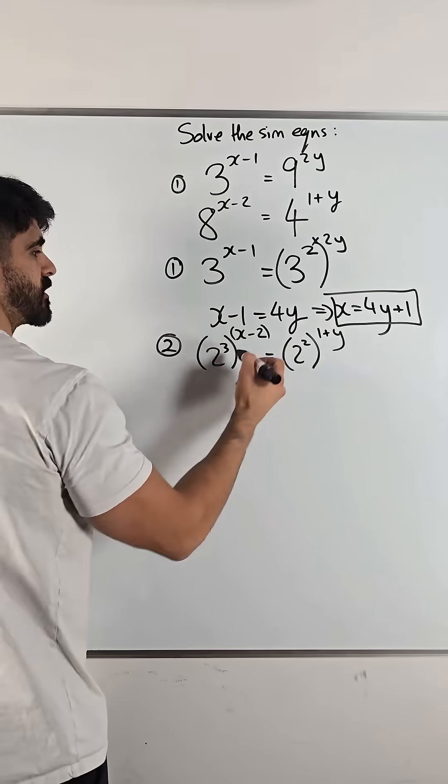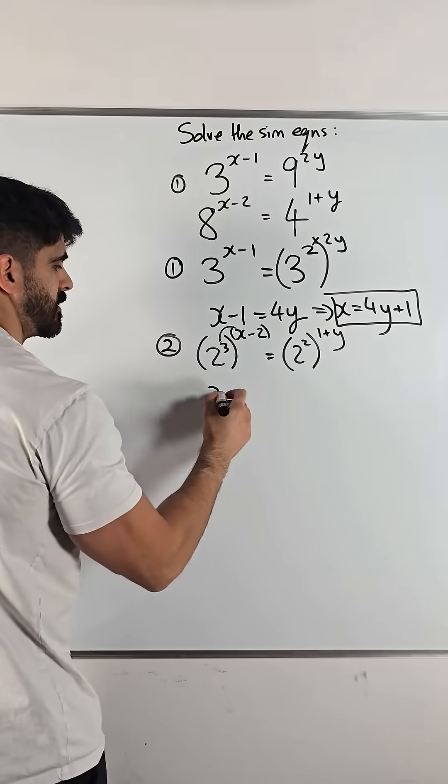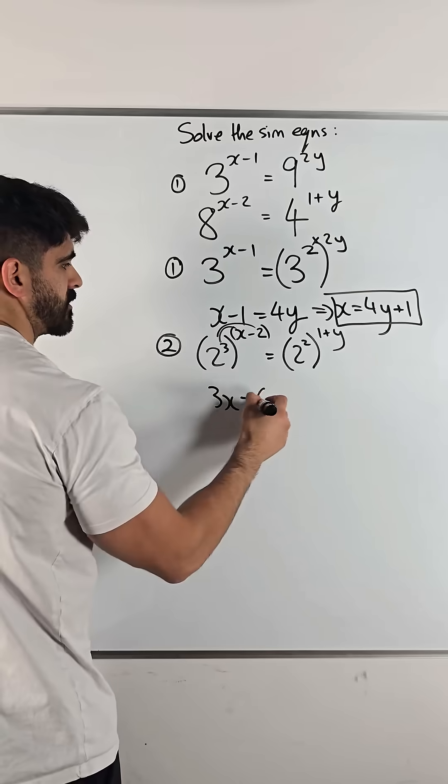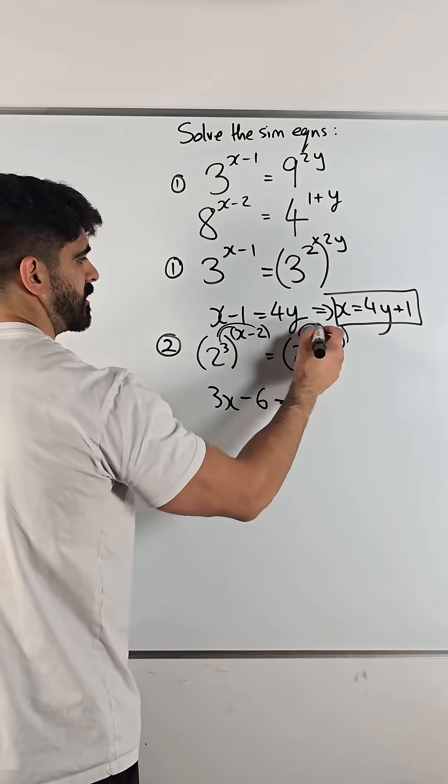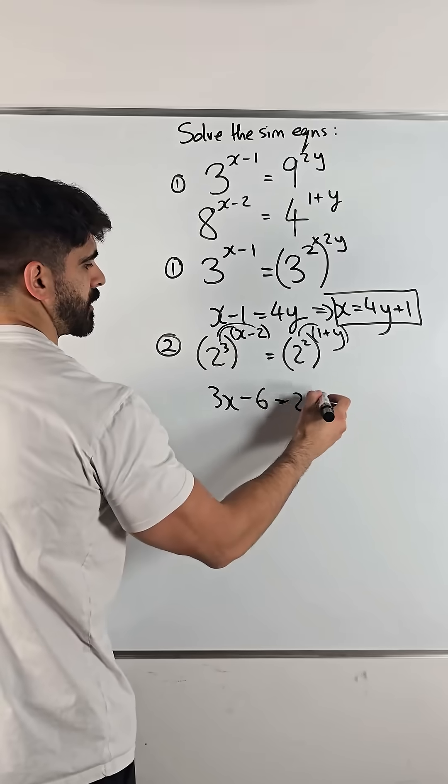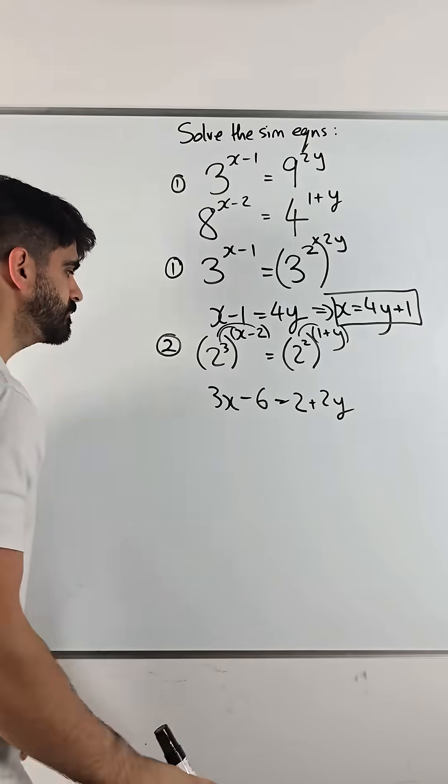Now, when we multiply, we have to be careful because there's two terms. So, it's 3x minus 6 is, here, protect, 2 plus 2y. Okay?